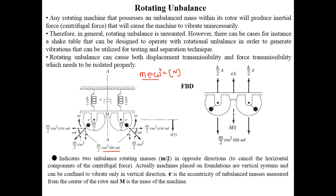Here, m/2 is the unbalanced rotating mass, e is the eccentricity, and capital M is the mass of the entire machine. The free body diagram tells us that the inertia term M·ẍ is positive in the downward direction — the same direction as the vertical centrifugal force component — while the restoring forces of the spring and damper act in the opposite direction. We then apply Newton's second law in the vertical direction.